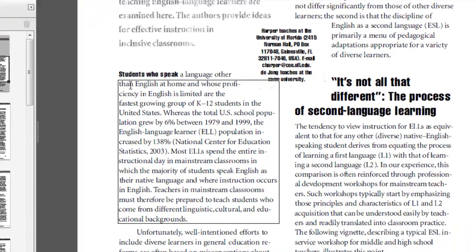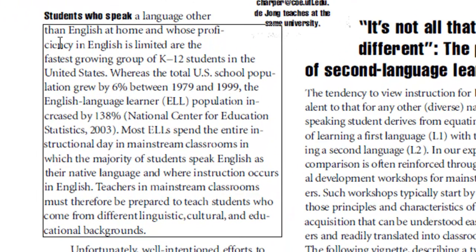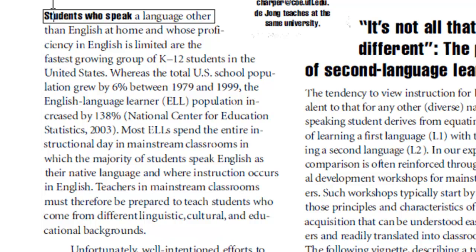Children at home whose proficiency in English is limited are the fastest growing group of K-12 students in the United States. Whereas the total US school population grew by six percent between 1979 and 1999, the English language learner population increased by 138 percent (National Center for Education Statistics, 2003). So the program is reading out loud for you.